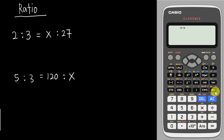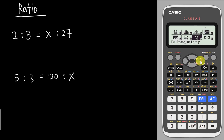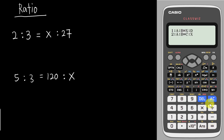This video is sponsored by Casio Malaysia. I will teach you how to solve ratio-type questions using the new Casio 570 EX calculator. This calculator has a new feature called ratio. If you go into the menu and come down to 'C', you should be able to see a ratio option. Tap enter and you will have two different patterns.